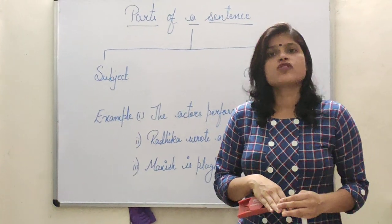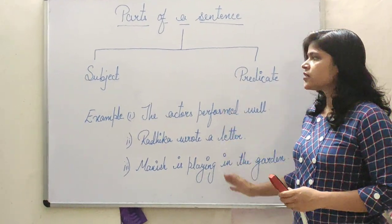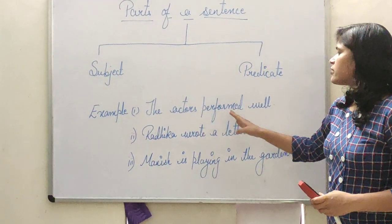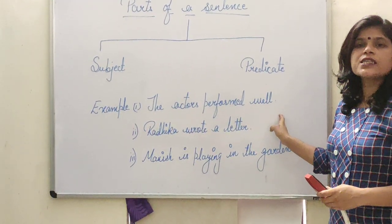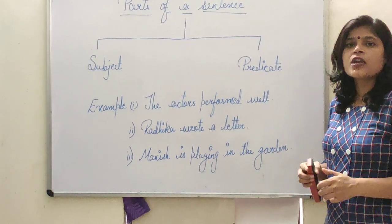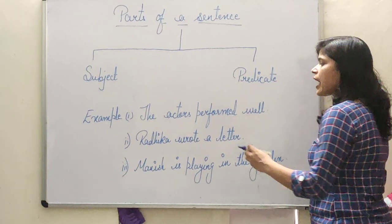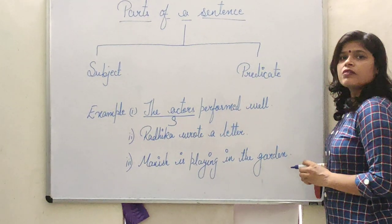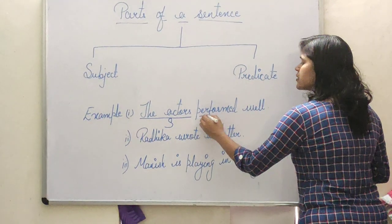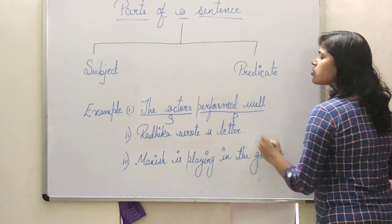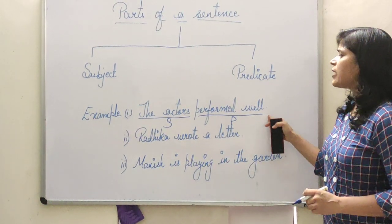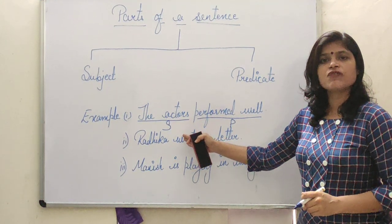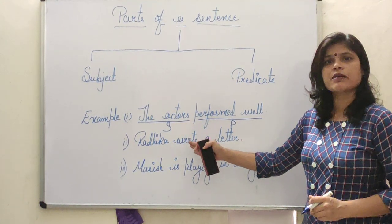We will understand subject and predicate with three examples one by one. First: 'The actors performed well.' Here 'the actors' is the subject, and 'performed well' is the predicate, because here we have talked about the actors. That is why 'the actors' is the main part and is the subject.